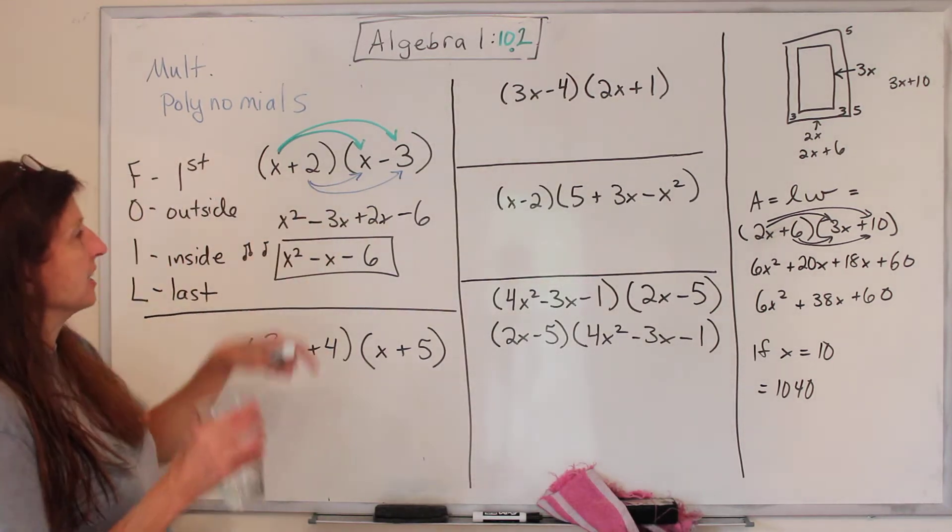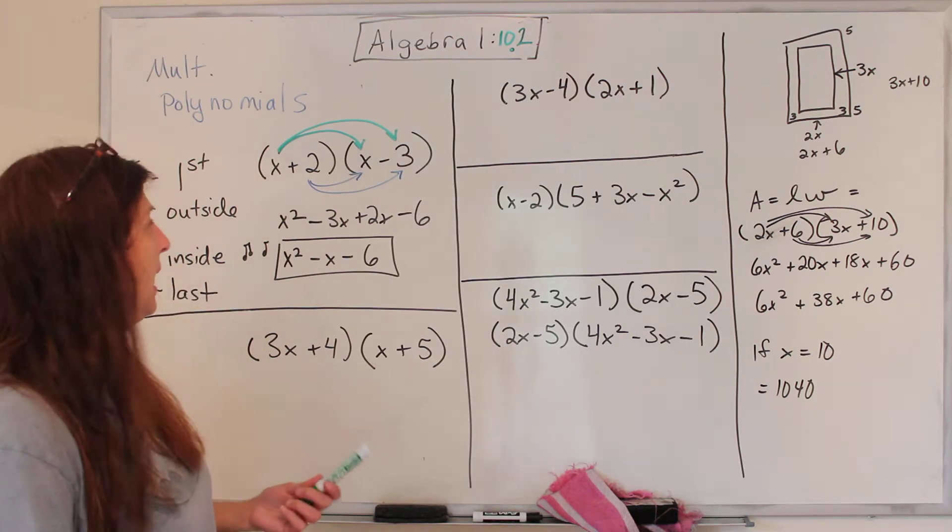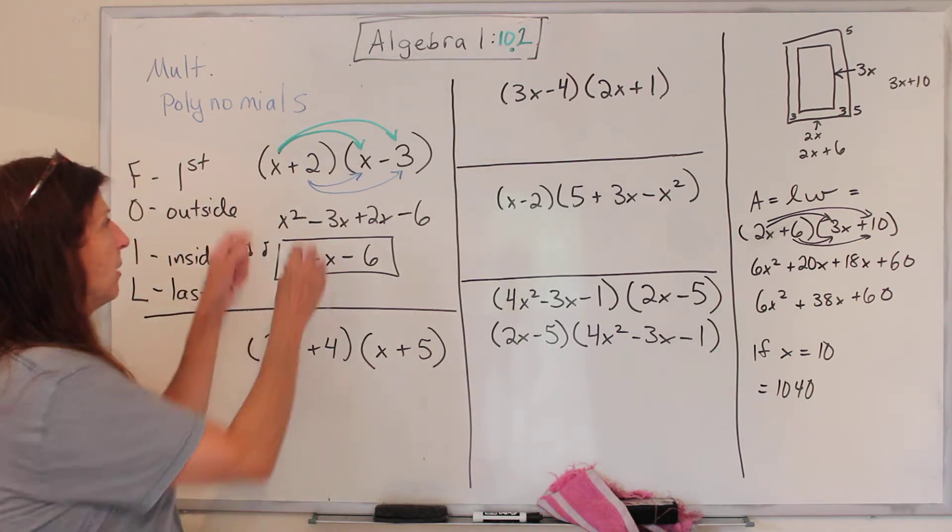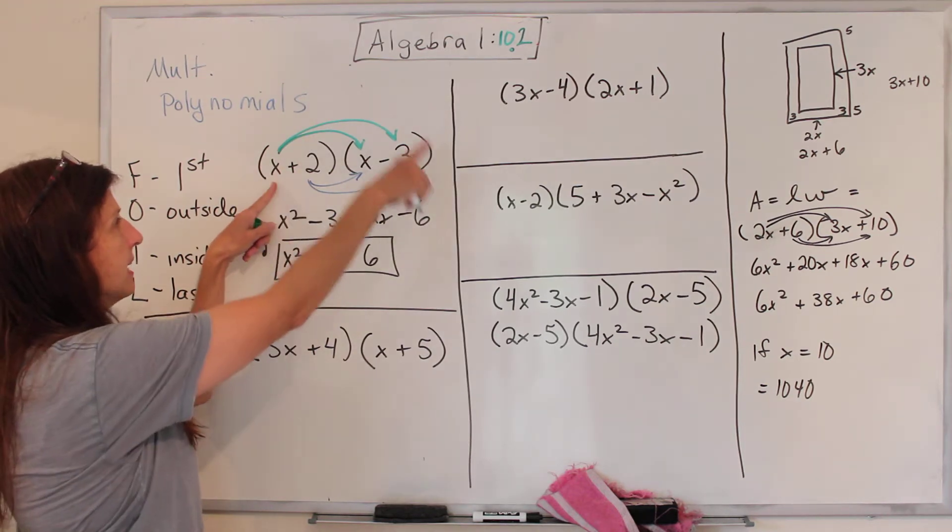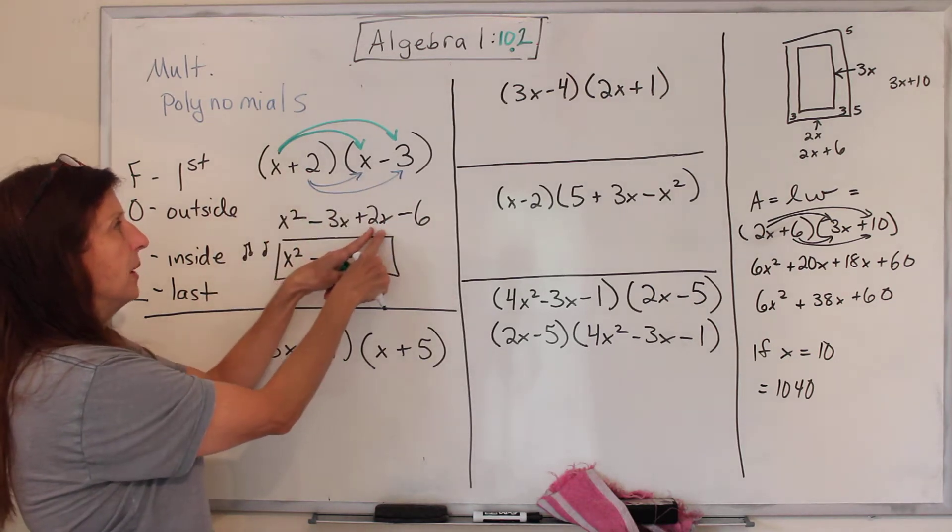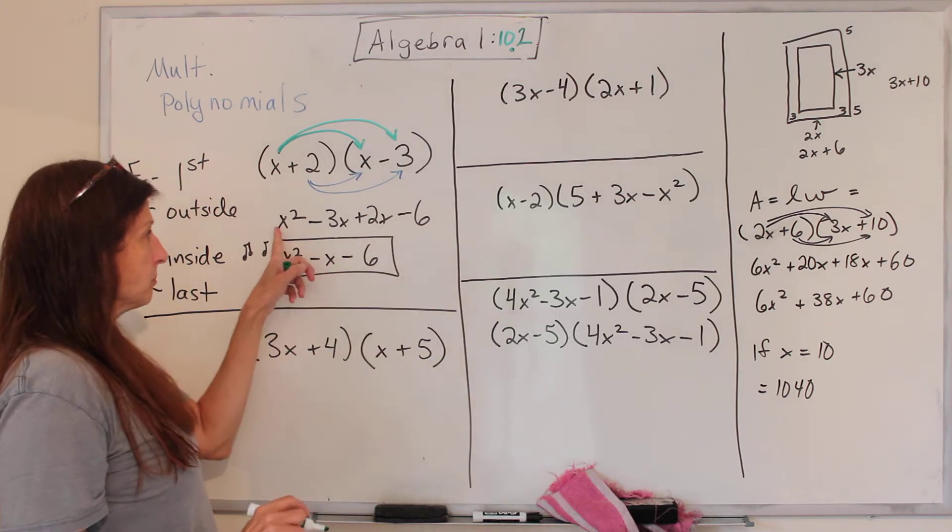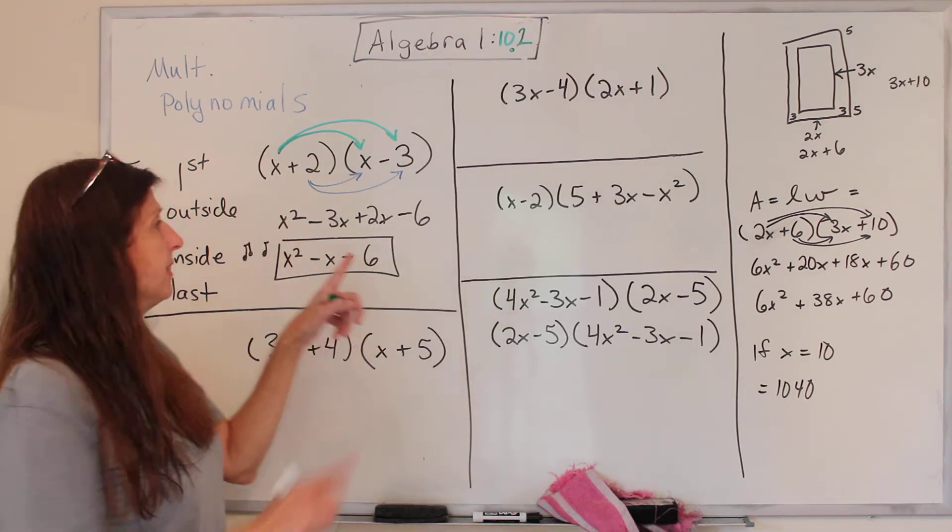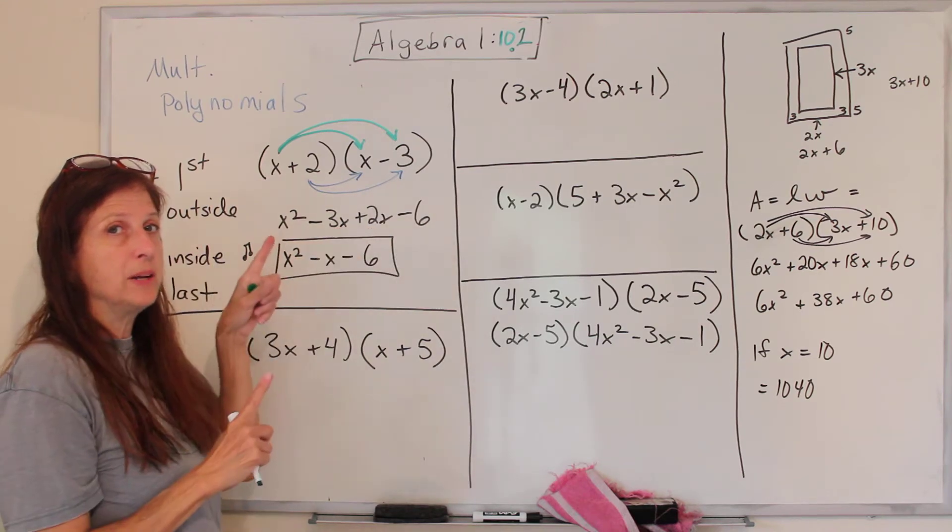I always thought it kind of looked like a smiley face a little bit. So now we're going to do it. x times x is x squared. x times negative 3 is negative 3x. 2 times x is 2x. 2 times negative 3 is negative 6.